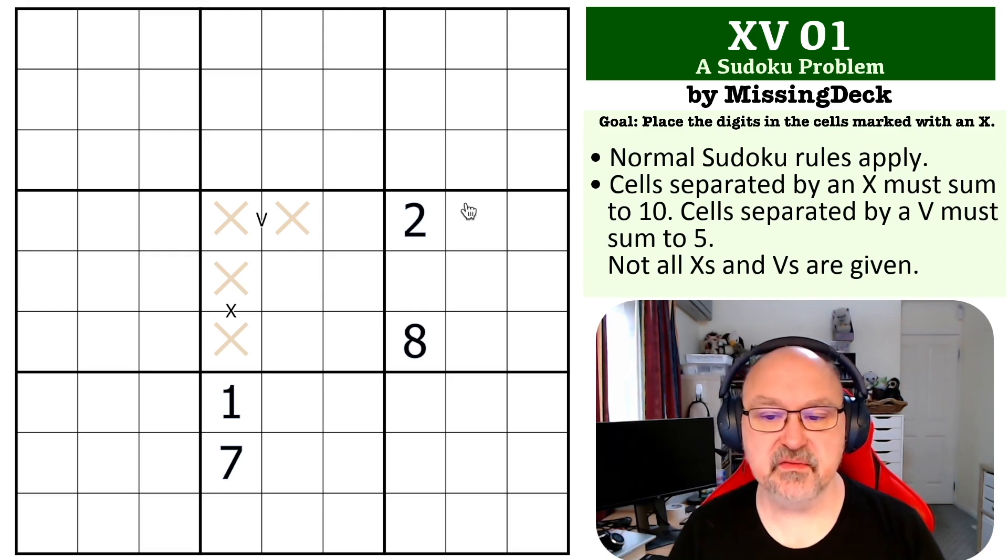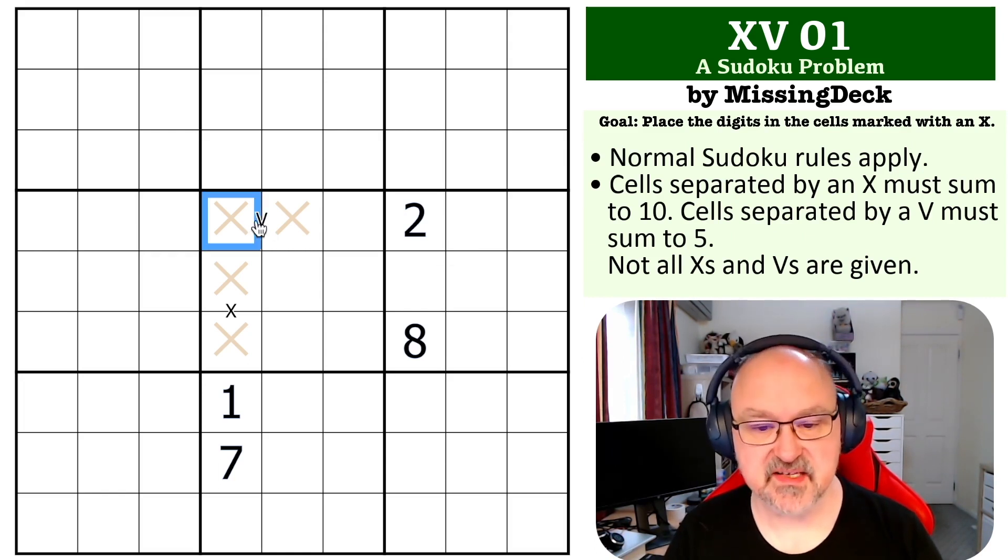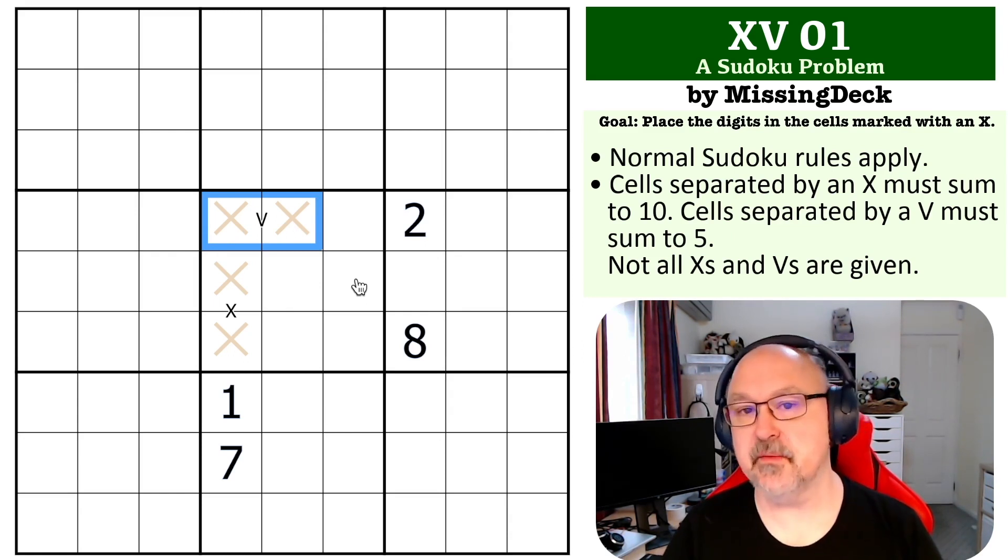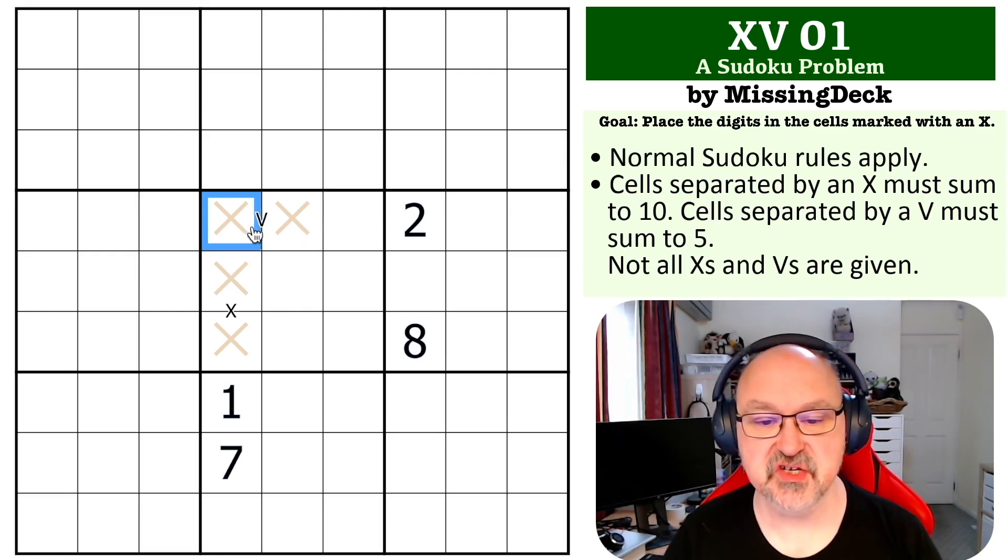Okay, so as I said, this one should be fairly easy. We know that digits that can be placed on a V must either be 1, 4 or 2, 5. They're the only ways of making two digits between 1 and 9 sum to 5. But we can't do 2, 3.